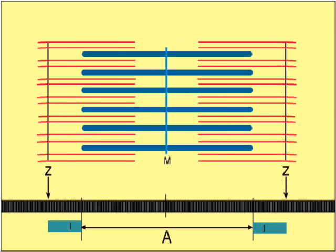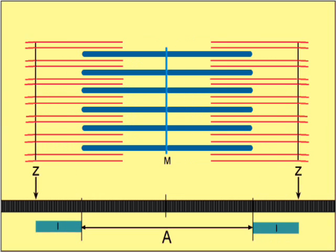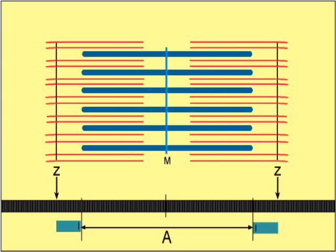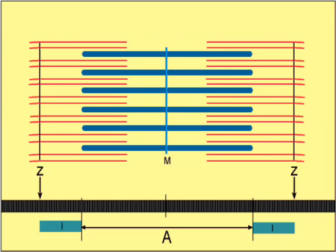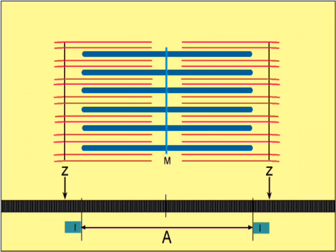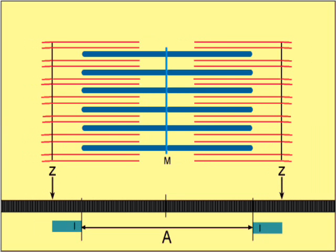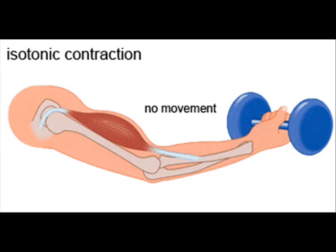Muscles undergo contraction. Muscles can only pull but cannot push. This would be a problem if a joint was controlled by just one muscle. As soon as the muscle contracts and pulls on a bone, there would be no way to move the bone back again. This problem is solved by having muscles in pairs.